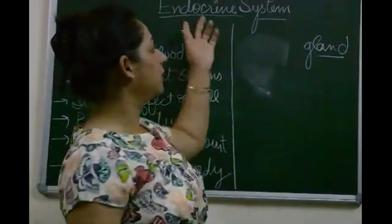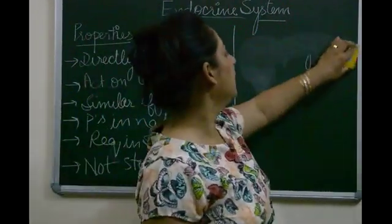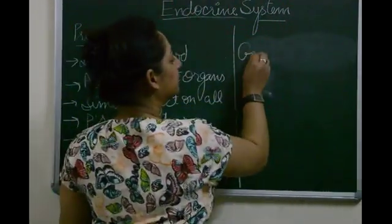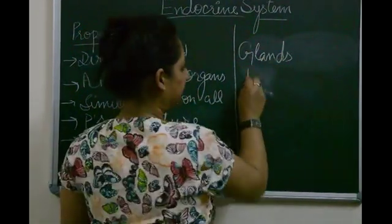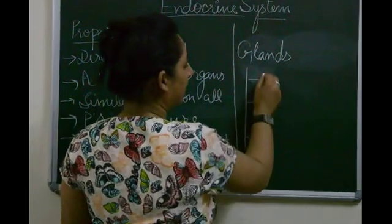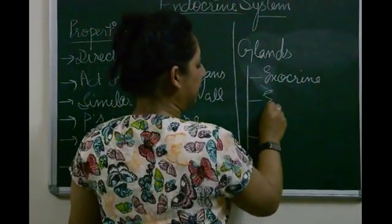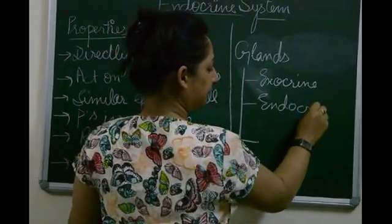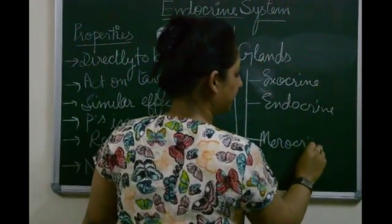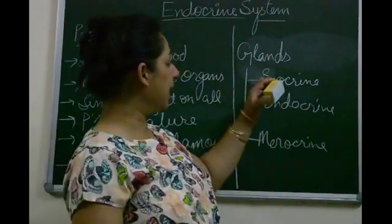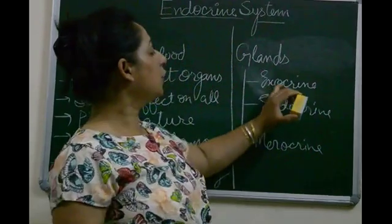Now, since our topic involves endocrine glands, be very clear that glands are of three types: exocrine glands, endocrine glands, and neurocrine glands.